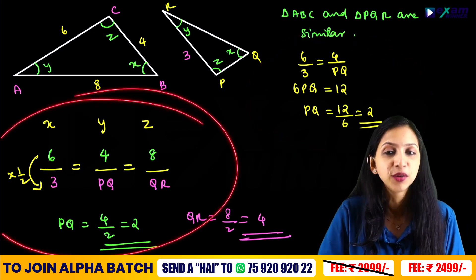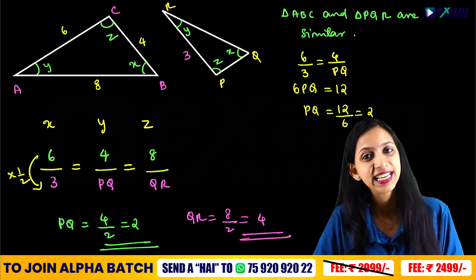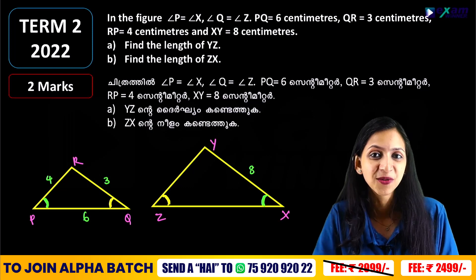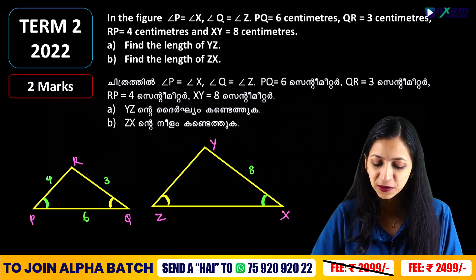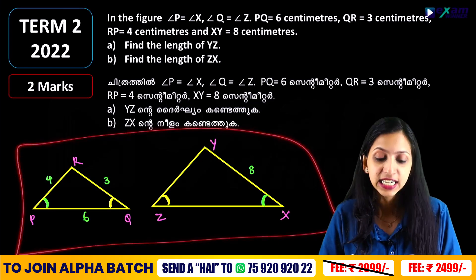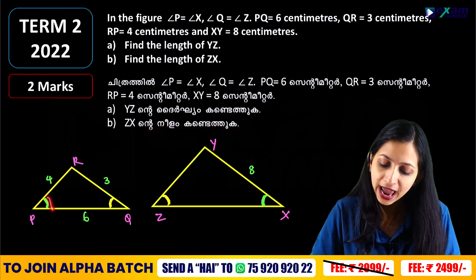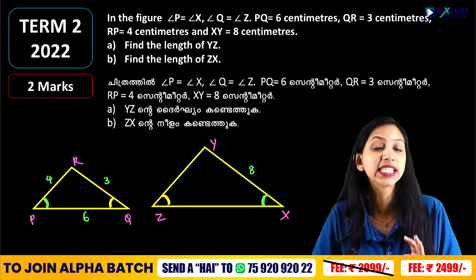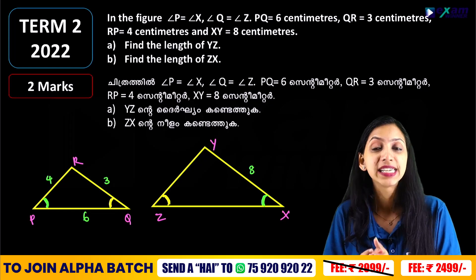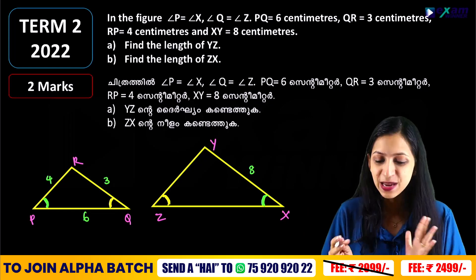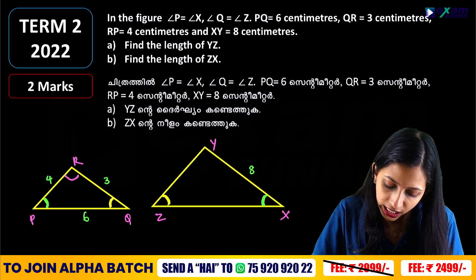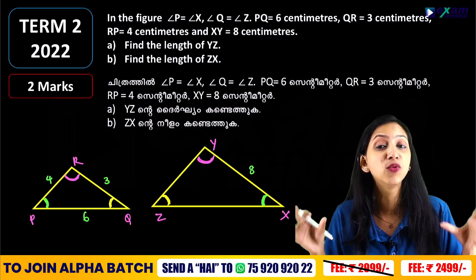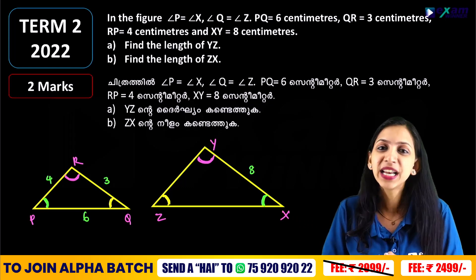Now you will find a similar question. We have two triangles. In these two triangles, angle P and angle X are the same, angle Q and angle Z are the same, and angle R and angle Y are the same. The two triangles are going to be equal — they are similar triangles.